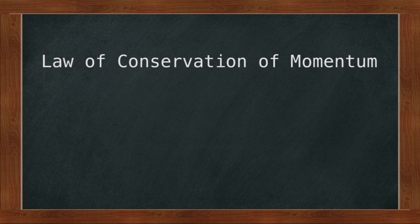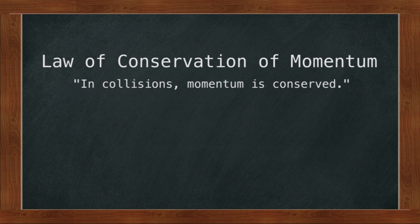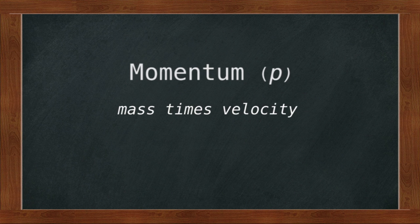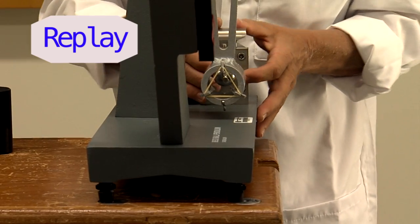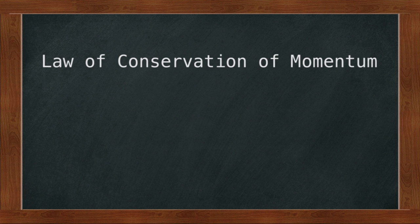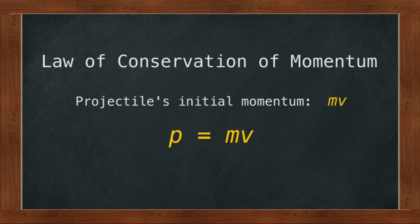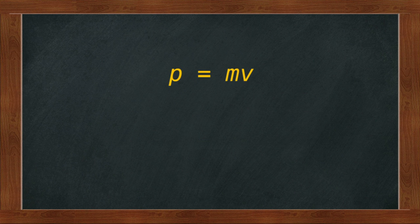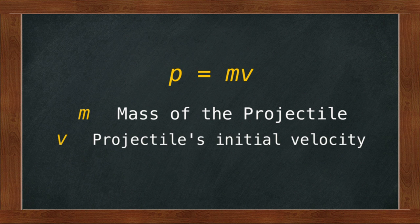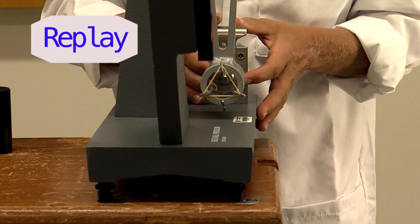The first law we will use is the law of conservation of momentum. This law states that in collisions, momentum is conserved. Momentum has the symbol p and is mathematically defined as mass times velocity. We can think of momentum as how hard an object is to stop. When we launch the projectile, it immediately collides with the pendulum arm and becomes lodged inside, so we have a collision here.